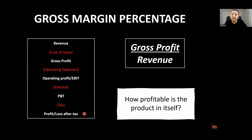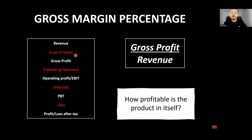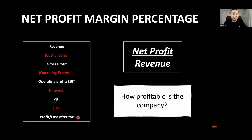Why do we divide a number by revenue? It tells you how profitable something is, because you're dividing it by the income the item produces. With gross margin, you're only deducting the direct costs. If you're baking bread, you're only deducting the ingredients — that shows you how profitable the product itself is. If you're making cars, only the parts to make the car. Gross profit over revenue shows the profitability of the product in itself.